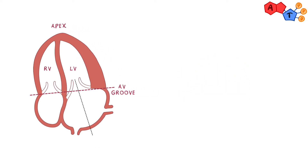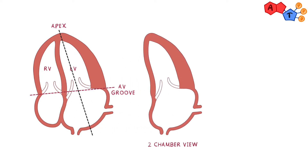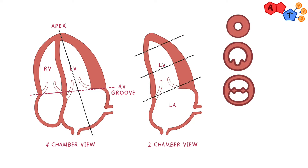Now if we were to draw an imaginary plane that comes through the left ventricle, what we would have is a view called a two-chamber view. The two chambers are the left ventricle and left atrium, and this would be a four-chamber view. Now if we were to take this two-chamber view and make cross-sections of the heart, this will give us a short axis view again. For each level we'll draw a line — so we have the apex, the mid-ventricle, then the base.